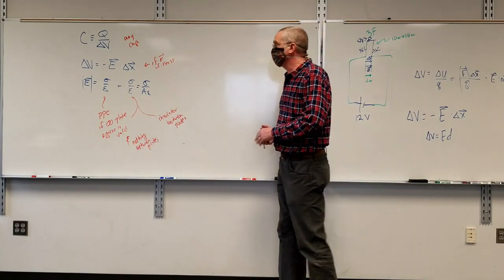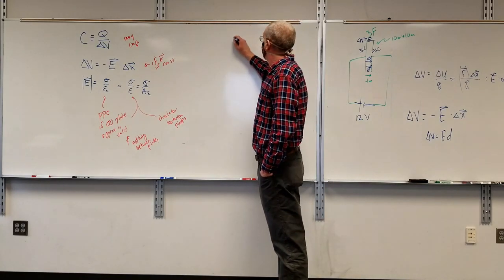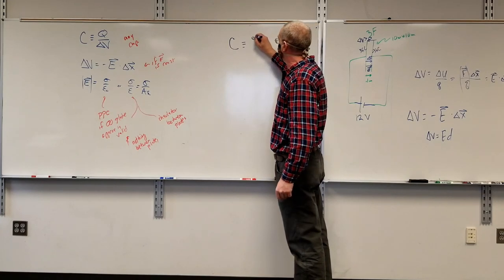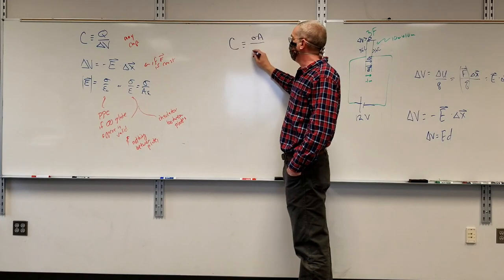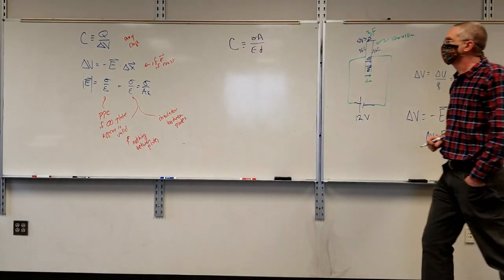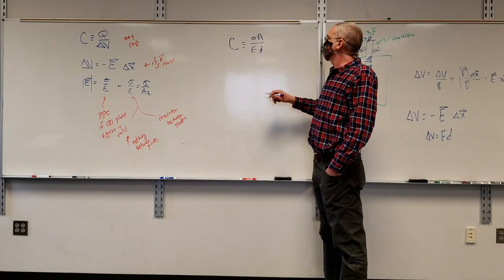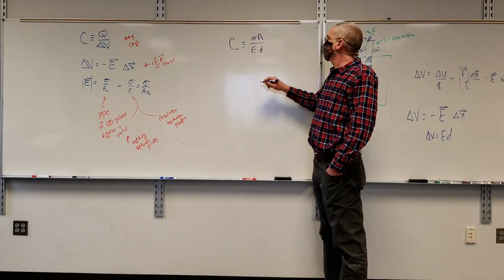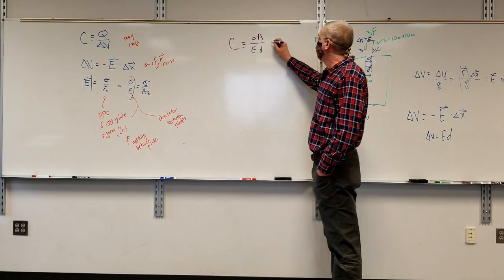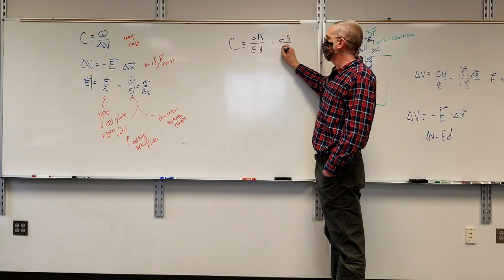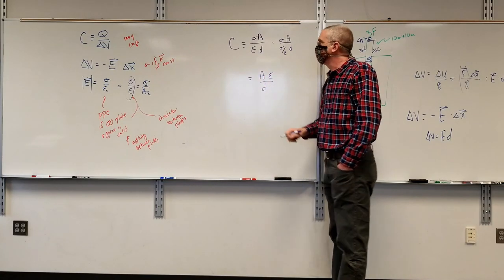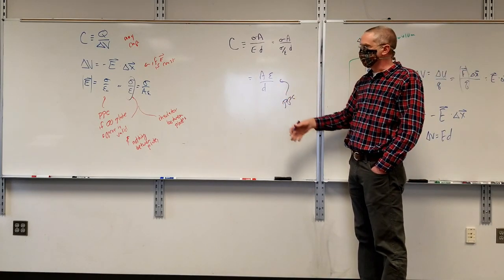Combining these under our nice parallel plate capacitor: my capacitance is the charge — since we have a plate with uniform charge distribution, that's sigma times the area — divided by my voltage, which is E times D. E is sigma over epsilon, so that becomes sigma A over (sigma over epsilon) times D. The sigmas cancel out, and what I'm left with is A times epsilon over D.